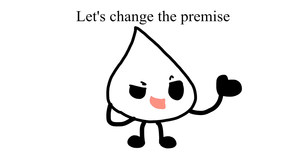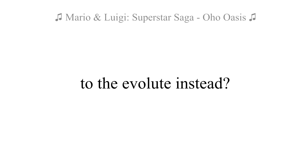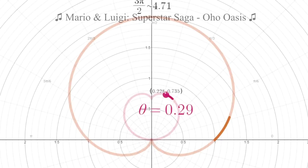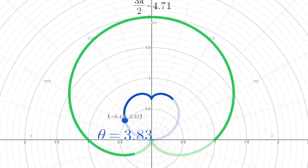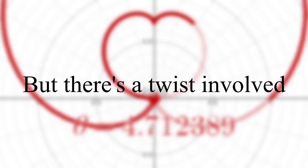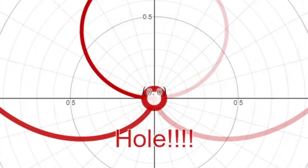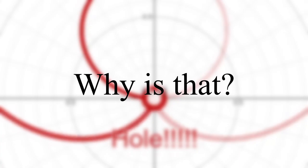Now let's change the premise. What if we plugged in 3 pi over 2 to the evolute instead? If we did, the parameter would yield 0, 0. But there's a twist involved, because this point is actually a hole in the evolute. Why is that?